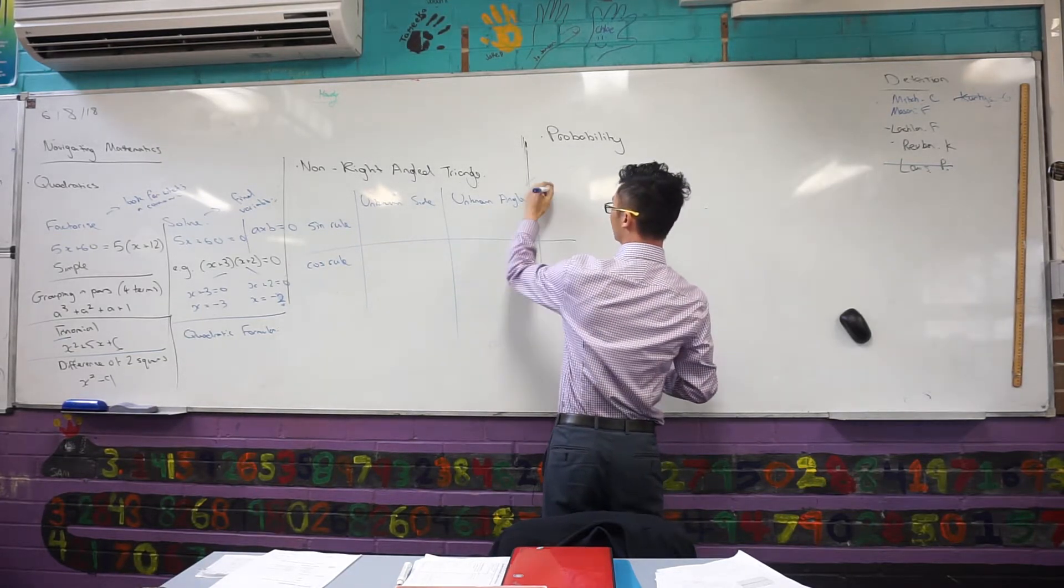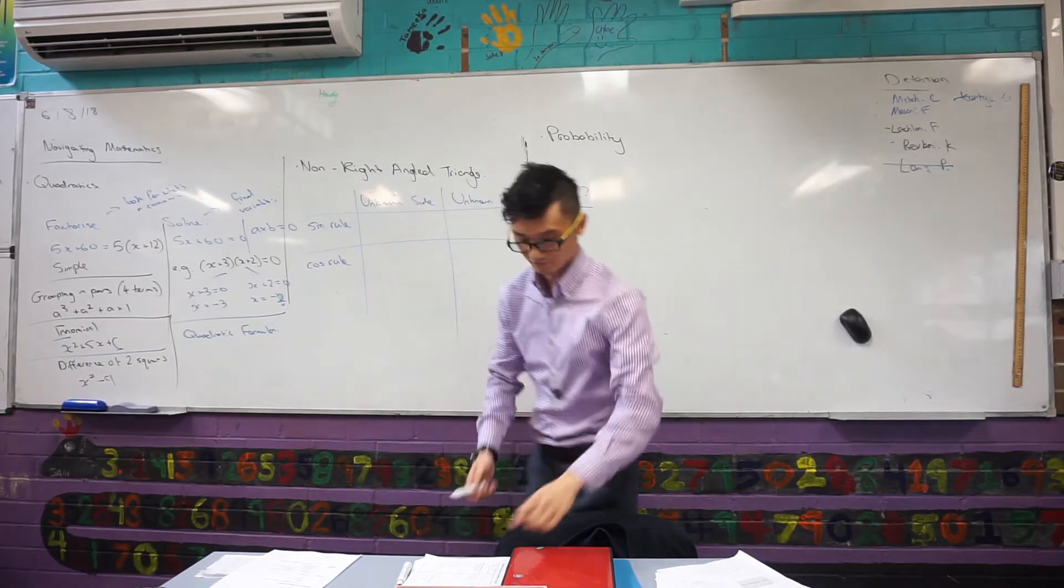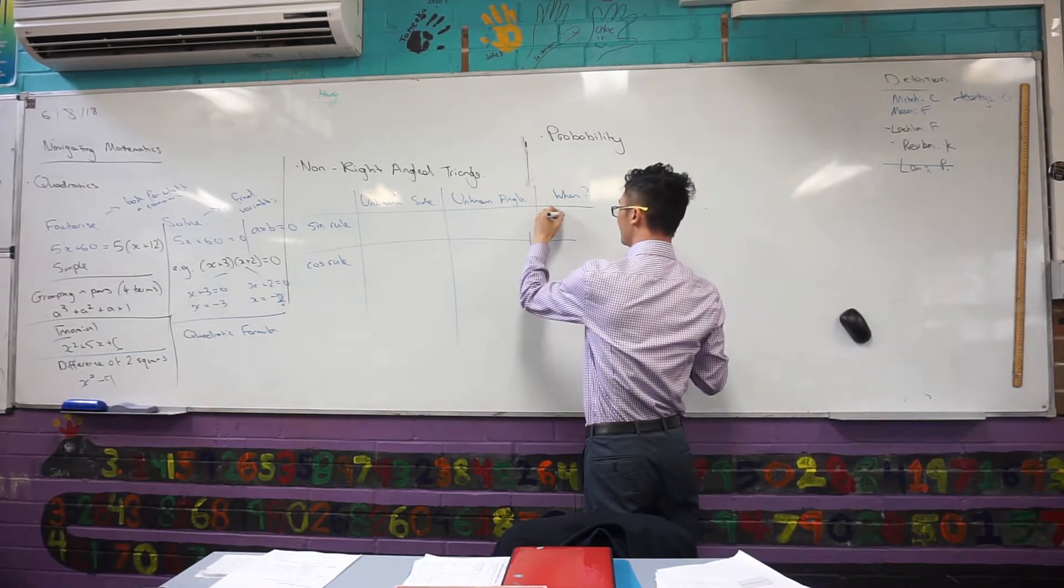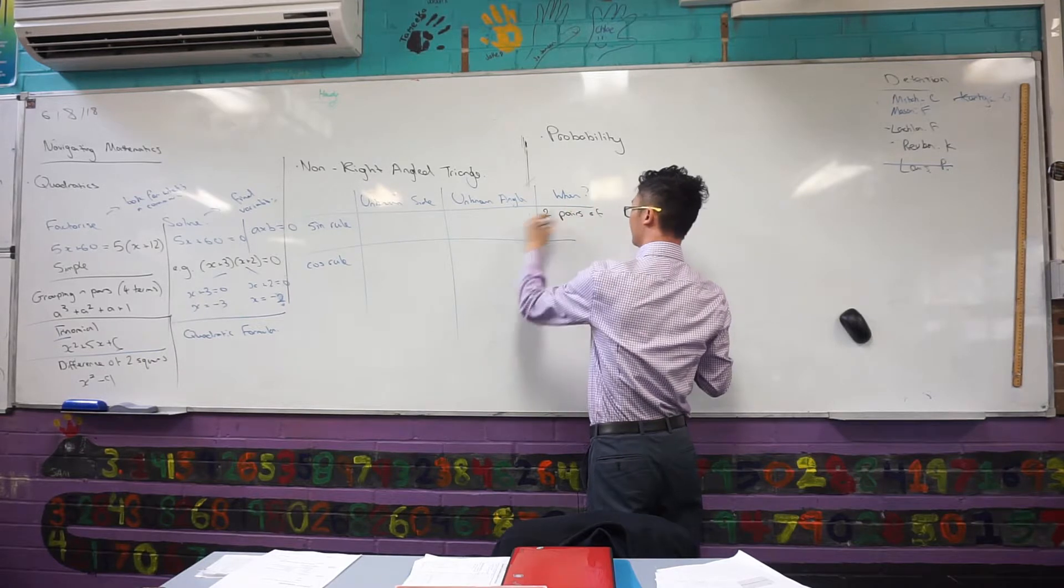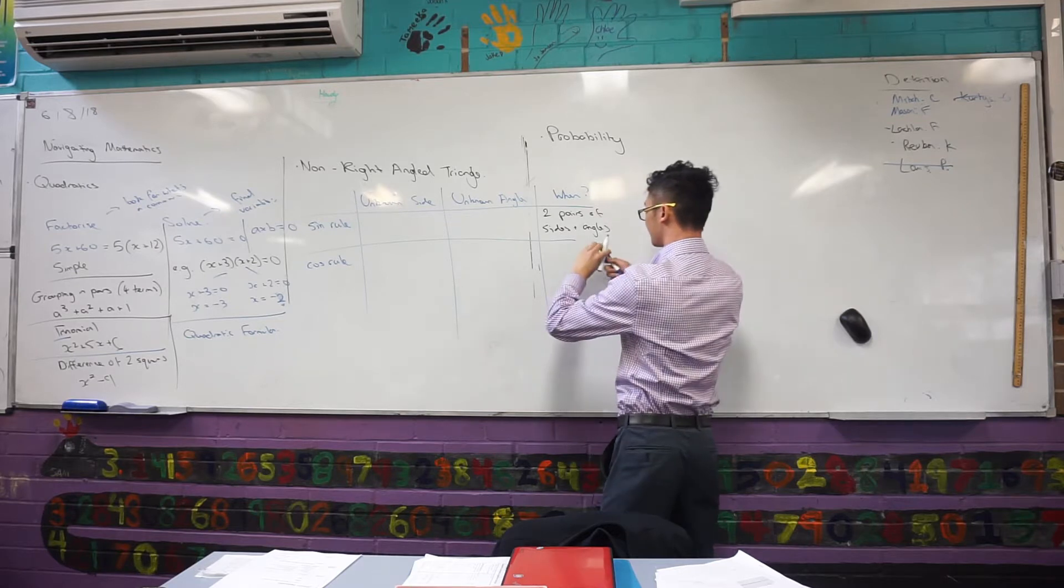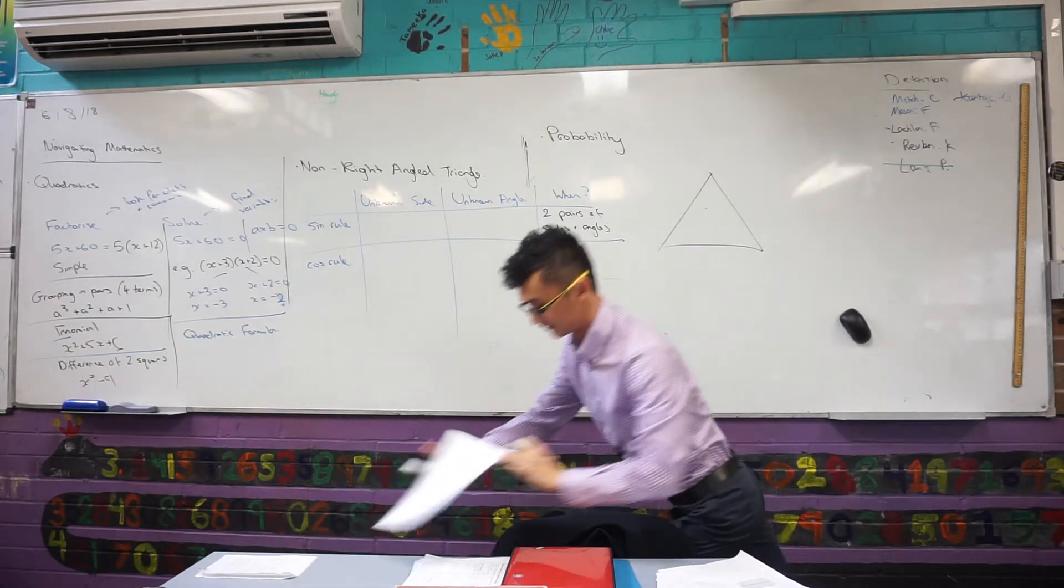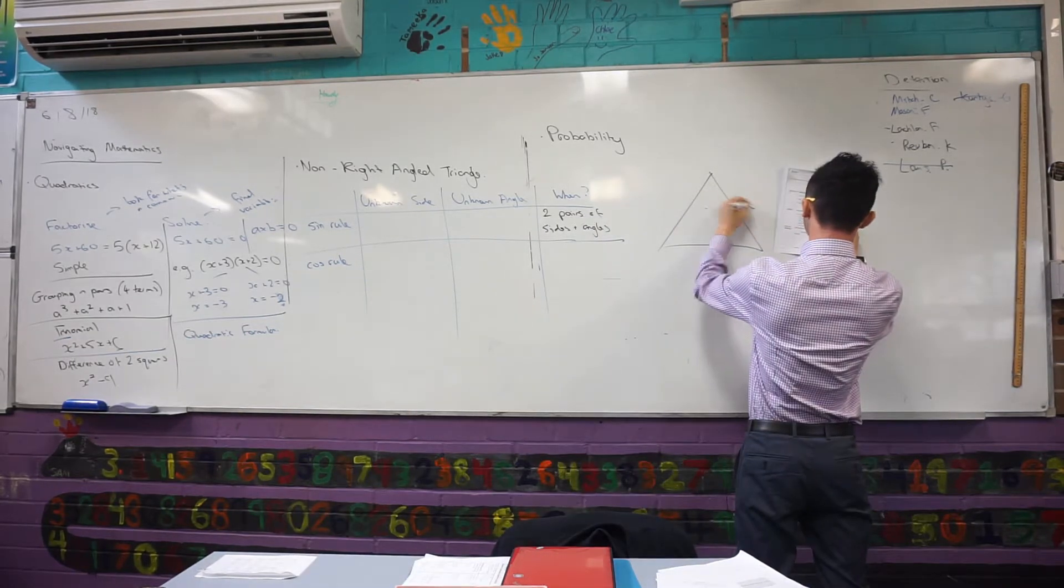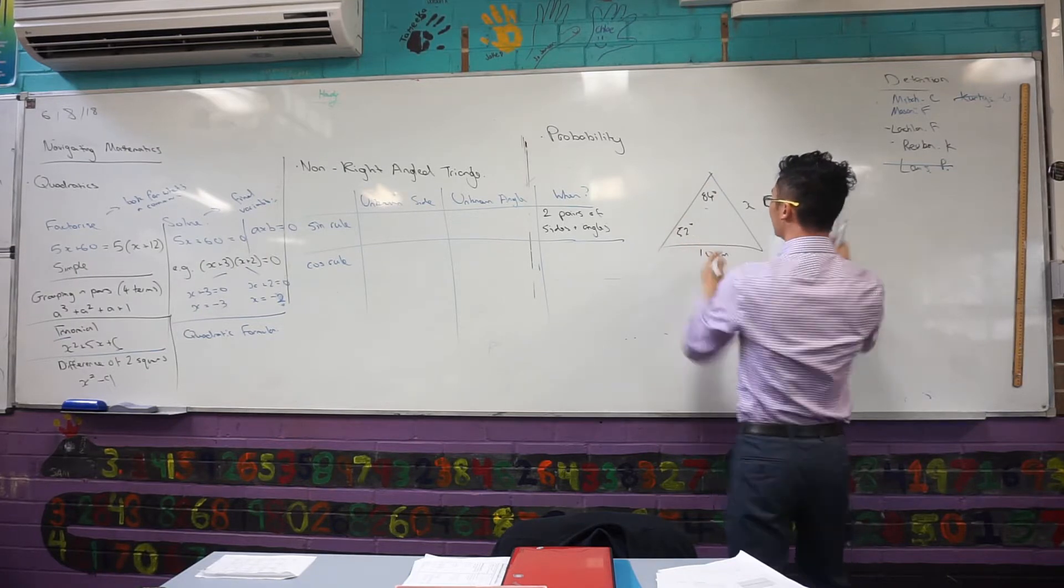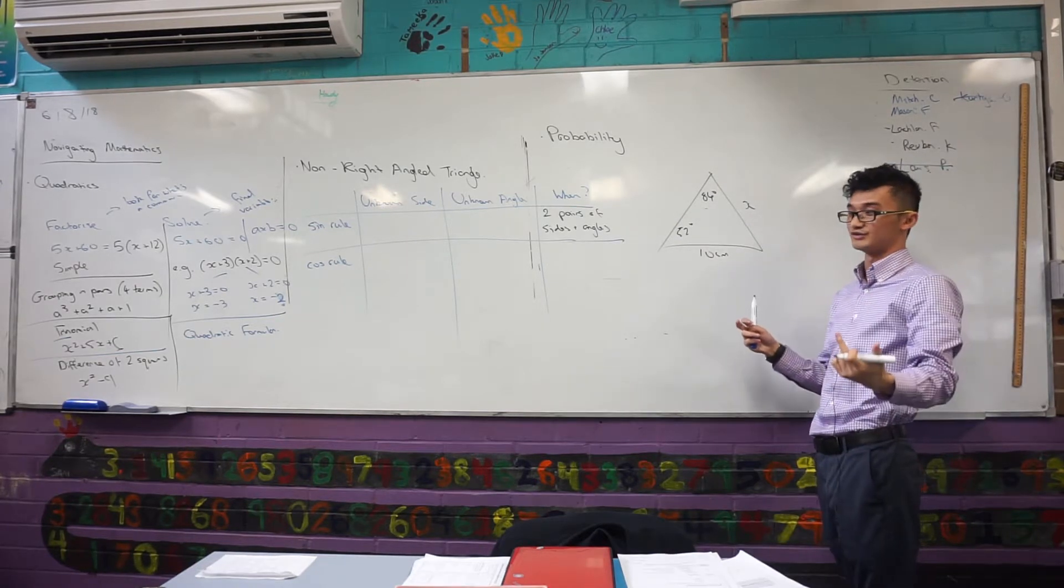Well, the answer to that is when. For the sine rule, you use the sine rule when you have two pairs of sides and angles. Two pairs of sides and angles. So what do I mean by that? I mean, if I have a triangle like this and let's say I have x, 84 degrees, 52 degrees and 10 centimetres. You can see clearly I have two pairs of sides and angles. That's when I want to use sine rule.